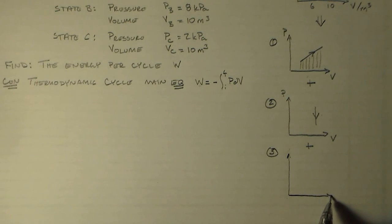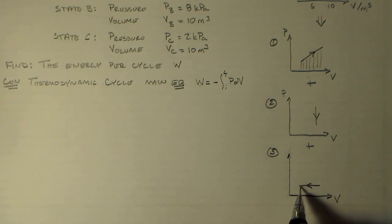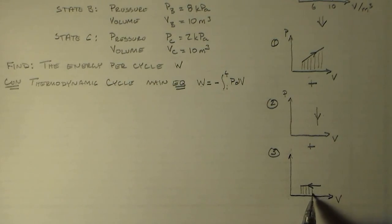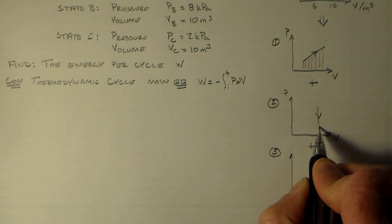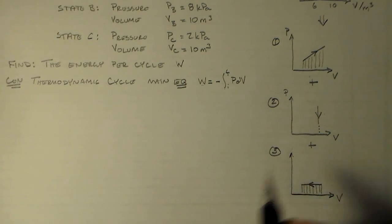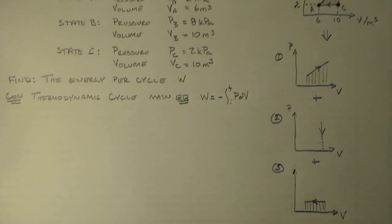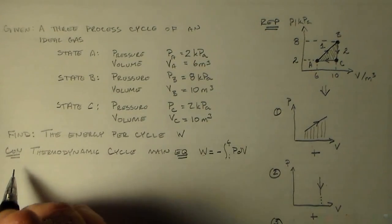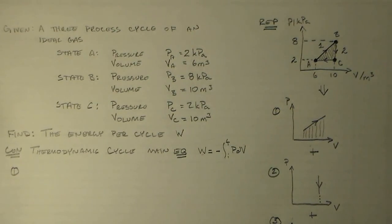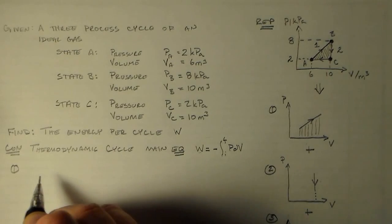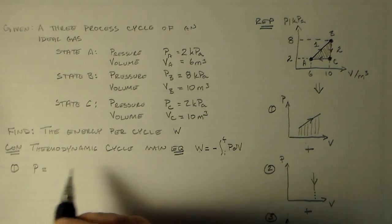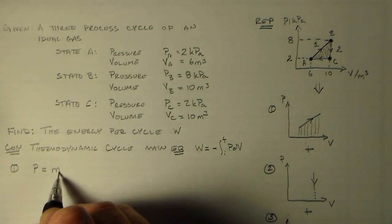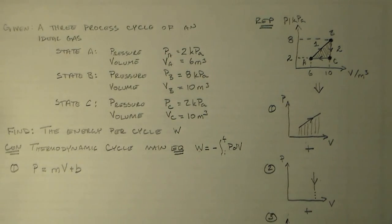The work done over that process is the area under the curve there. And you can see this is an isochoric process. So there's no work done there. So let's calculate the work for process 1. In this case, we know that the pressure is equal to M V plus B.